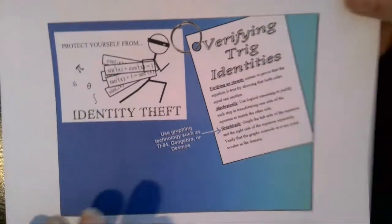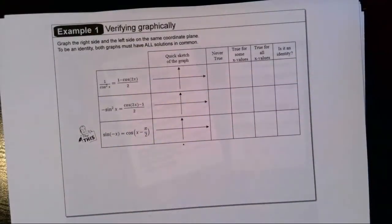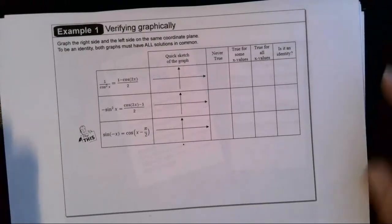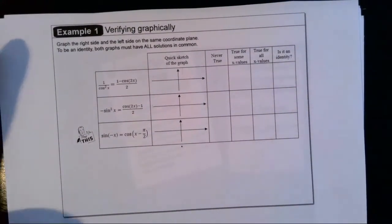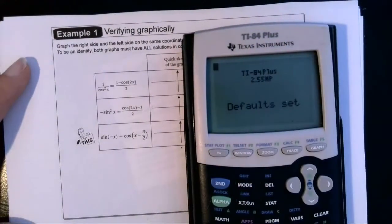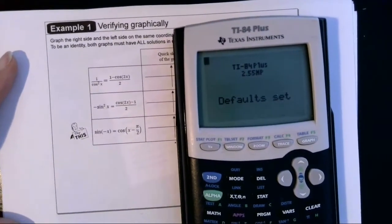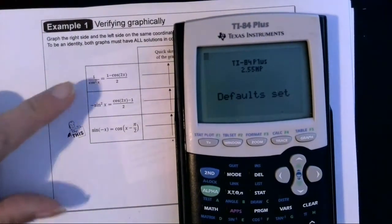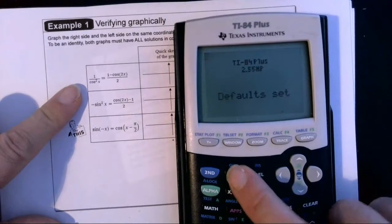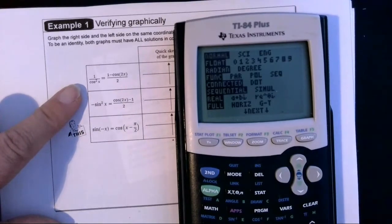So we're going to start with example one, verifying graphically, and in the calculator we're just going to do some setup here real quick. Because we're going to graph these in radians, we just want to double check that our mode is in radian mode.